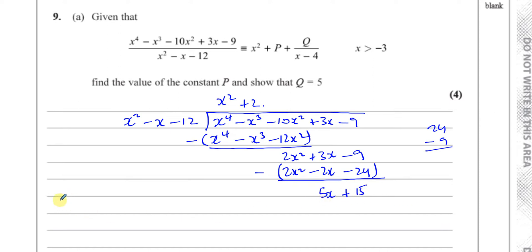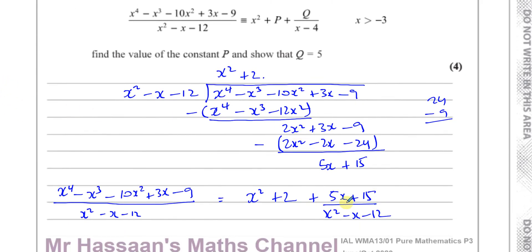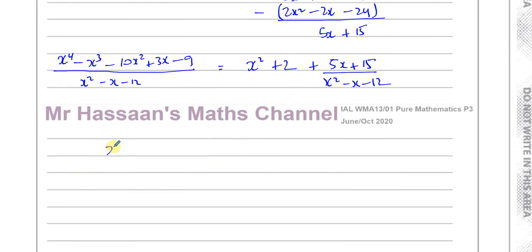So you can say that our original expression — x to the power of 4 minus x to the power of 3 minus 10x squared plus 3x minus 9 over x squared minus x minus 12 — is equal to x squared plus 2, which is your quotient, plus 5x plus 15 over x squared minus x minus 12. Now it's not quite how we're supposed to write it yet, because this can be simplified.